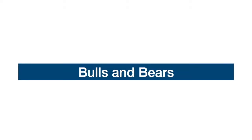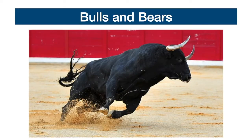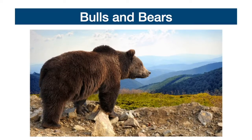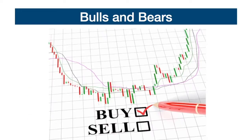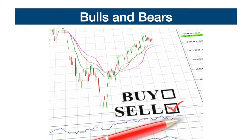In the world of finance, there are two main figures who dominate the market: the bulls and the bears. These two animals are referenced due to the way they attack their enemies. Bulls attack upwards using their horns, while bears attack downwards using their claws. The bulls are the buyers who speculate on the growth of a particular asset. Their purpose is to buy low and sell high to make a profit.